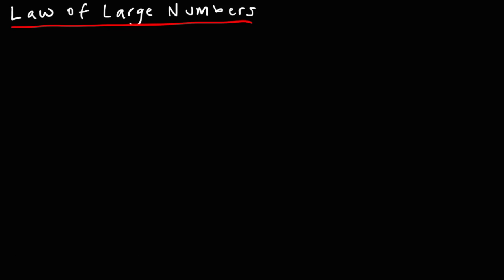The law of large numbers states that as we increase the size of a sample, the mean of that sample will get closer and closer to the mean of the population as n increases.